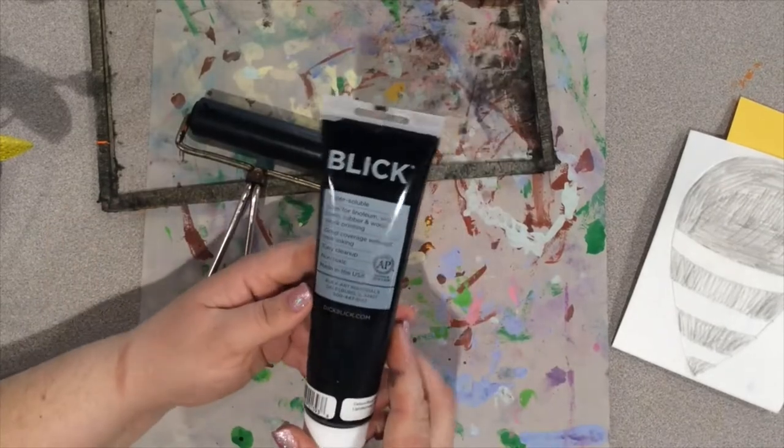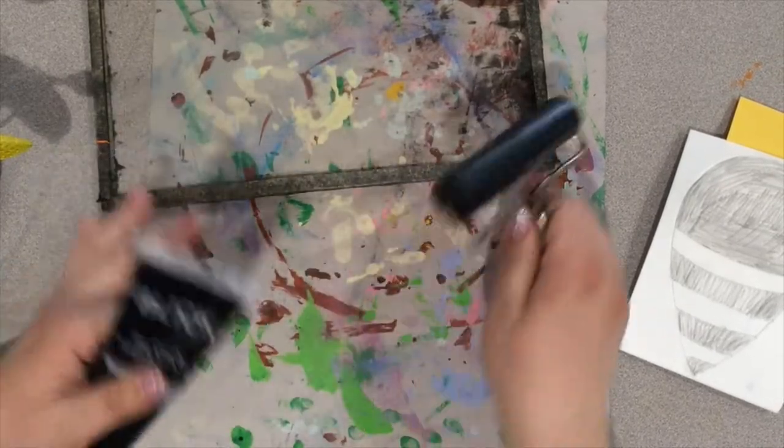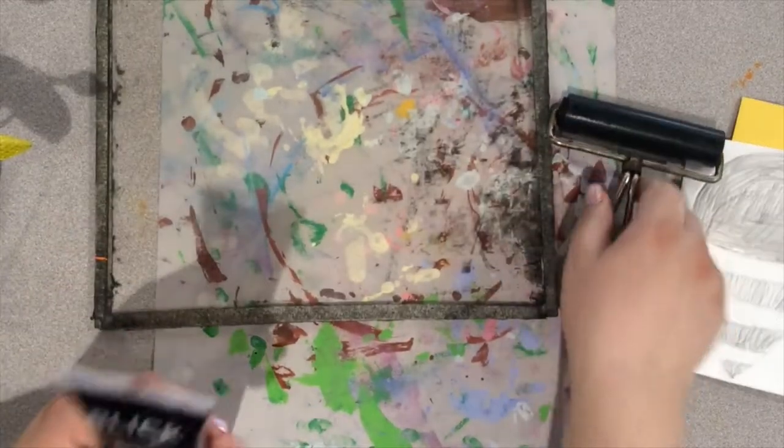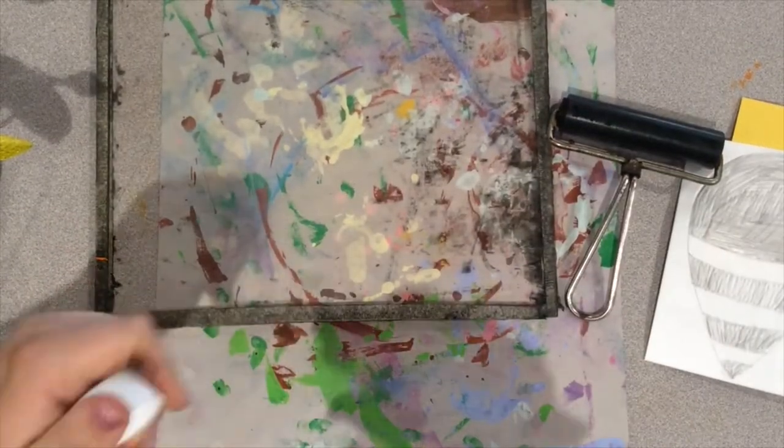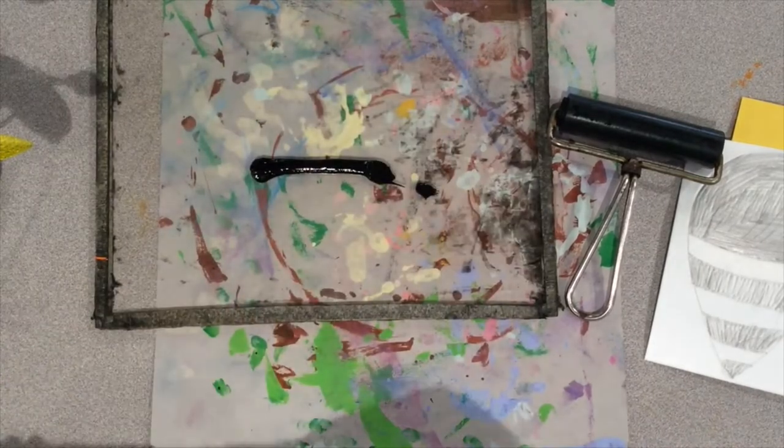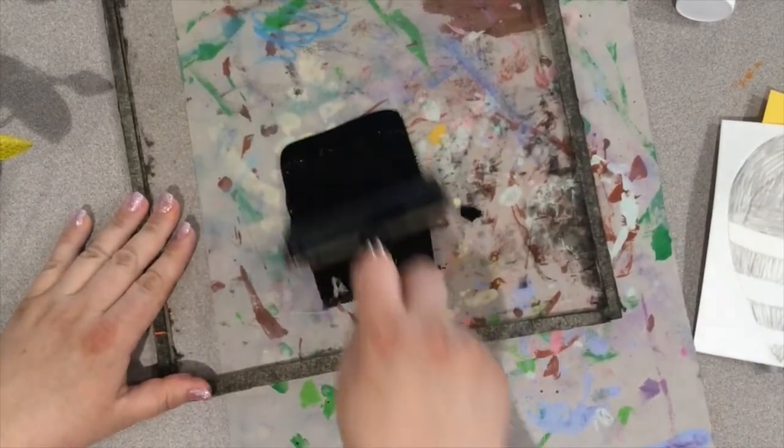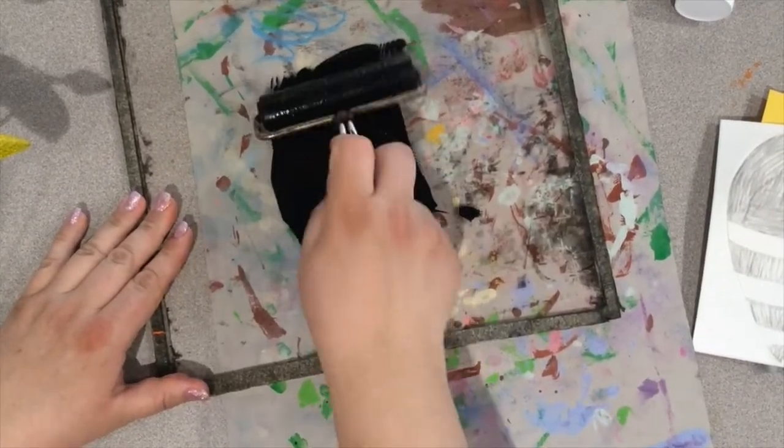For this, we're going to be using printing ink. Printing ink is basically a paint that's a little thicker and sticky. And then again, we'll be also using our brayer. Your teacher will put some ink onto the surface for you to roll the brayer through. When you're rolling your brayer, you want to go in one motion. Go forward, pick it up, bring it back.